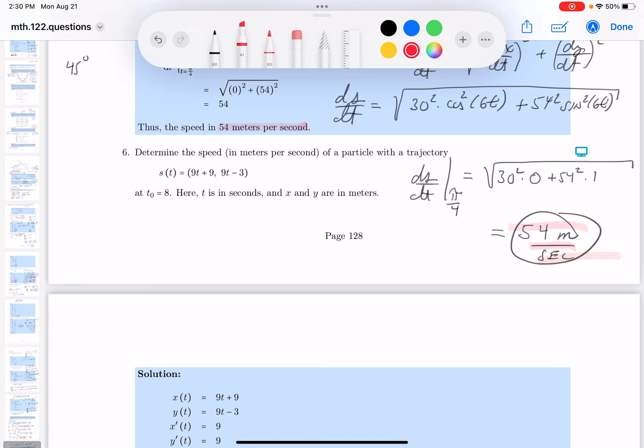All right, let's go for it. So we have x is a function of t, and it equals 9t plus 9. y is also a function of t, and it's equal to 9t minus 3.